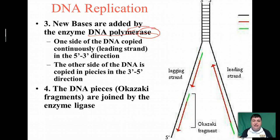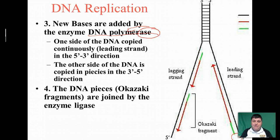Polymerase, because it's an enzyme, is specific to one end. It's going to be able to attach to the three-prime end and then add new nucleotide bases at the five-prime end.